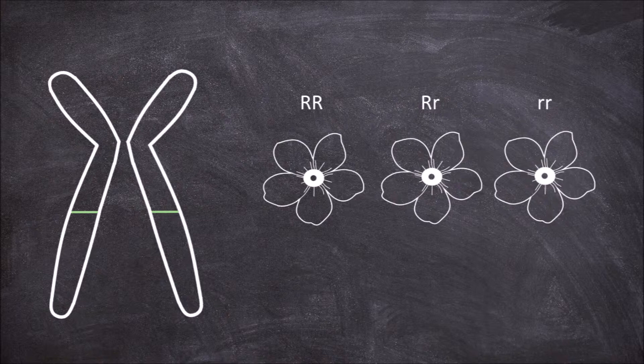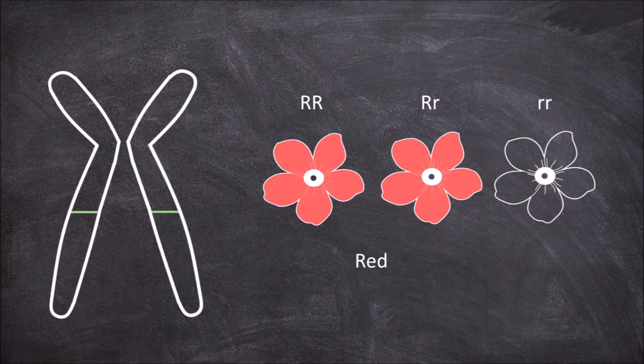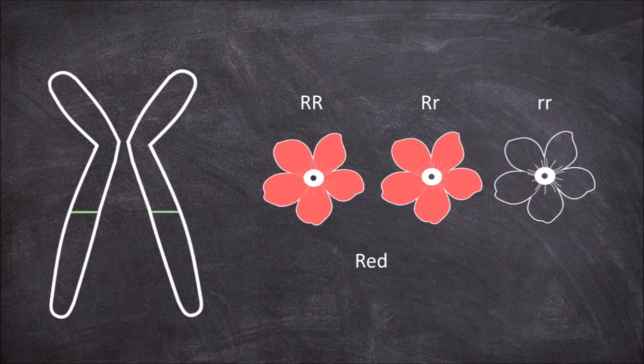The genotype big R big R gives the phenotype of red flowers, as well as the genotype big R little r, as the big R is dominant over the little r, so the red allele is expressed giving the phenotype of red flowers.